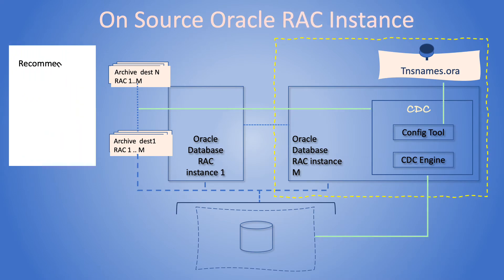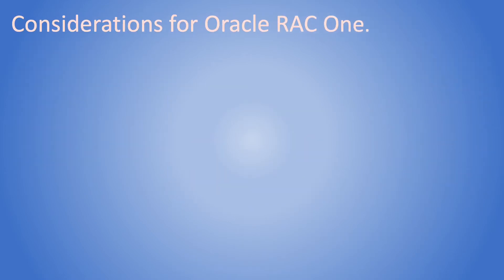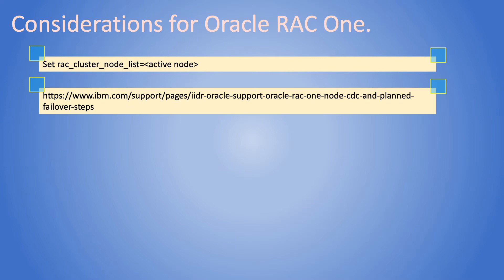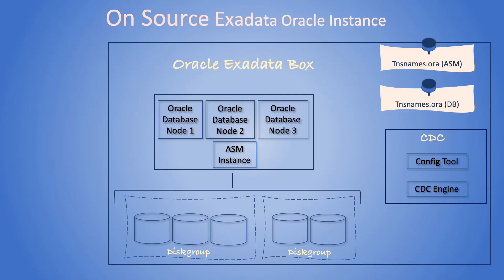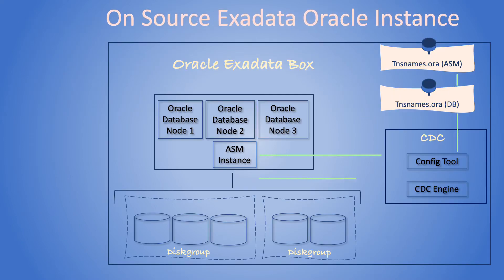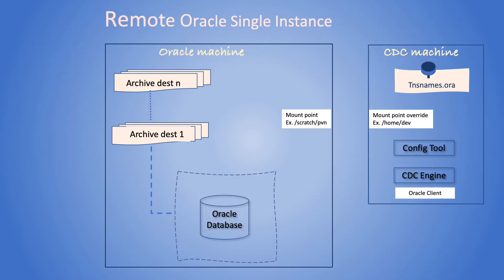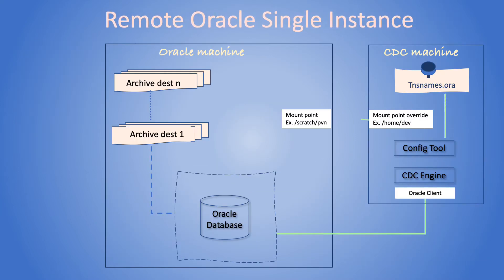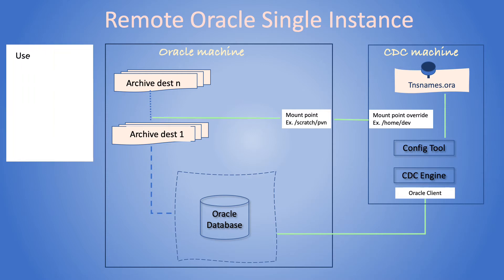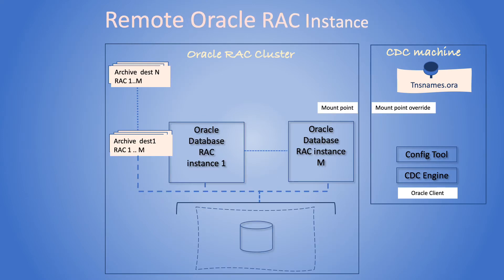Oracle RAC requires special considerations — we will have to set the RAC cluster node list parameter. I will add the link in the description section. The IBM Replication engine can be installed in the same box as Exadata. For a remote configuration, CDC should have access to archive logs and Oracle client must be present.